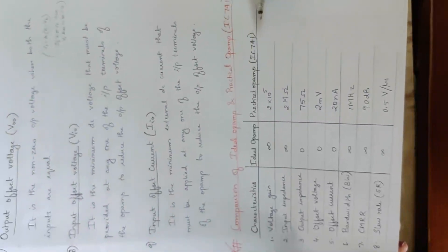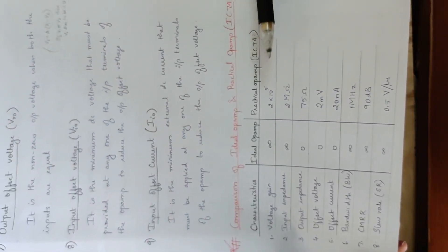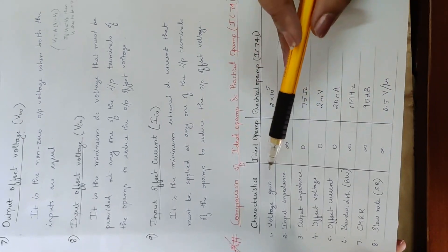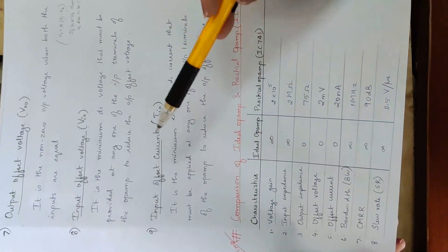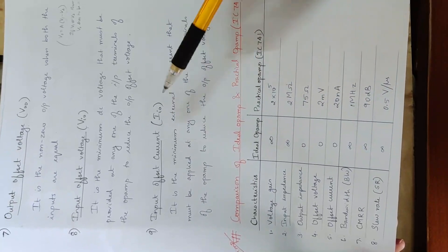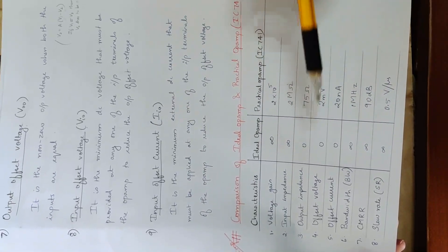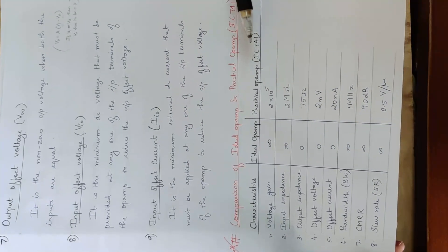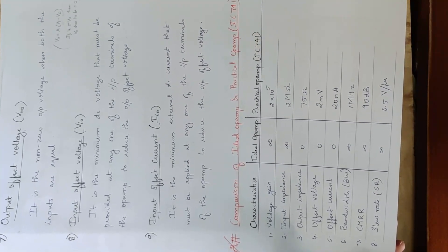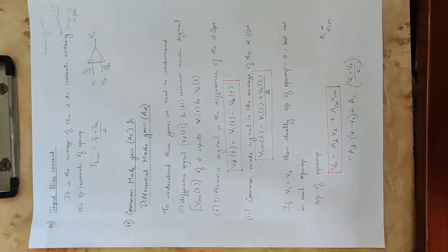We are going to compare ideal op-amp and practical op-amp, looking at different properties. We begin with input offset current, comparing the ideal op-amp and the practical op-amp — specifically the IC741. Now we are going to learn some properties of the op-amp.